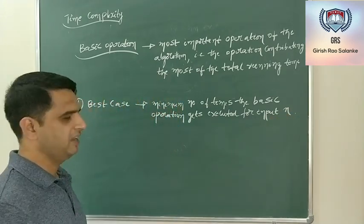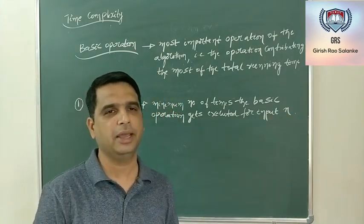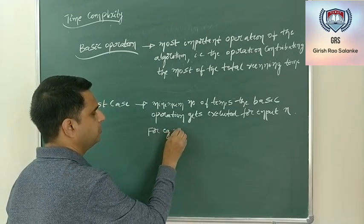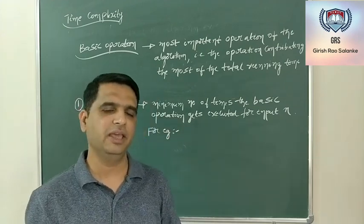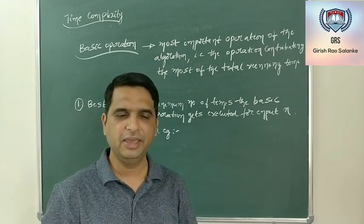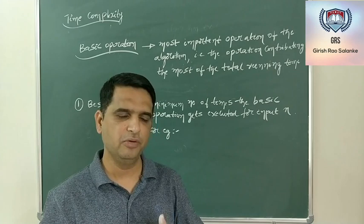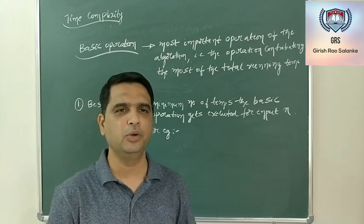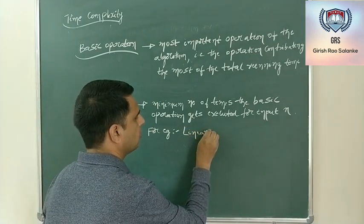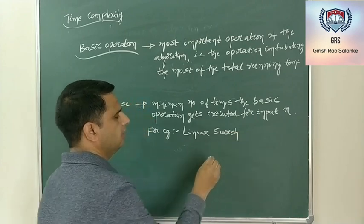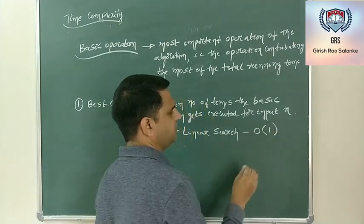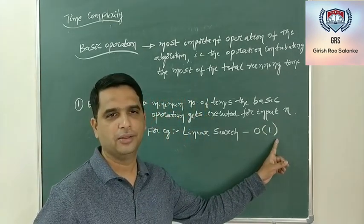Note that best case, worst case, and average case depend on what input is supplied to the algorithm. For example, if the objective is to search an element in a given array using linear search, and the key element is present at the first position, then the number of comparisons done is only 1. So the best case efficiency of linear search is order of 1.